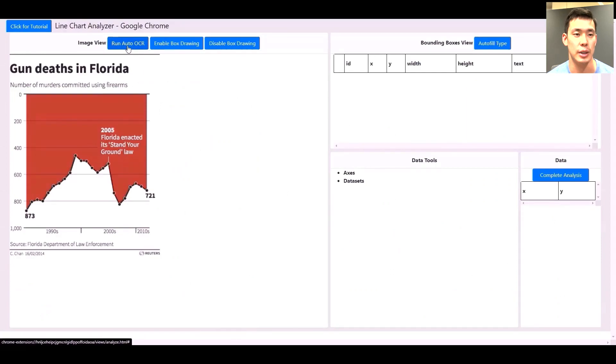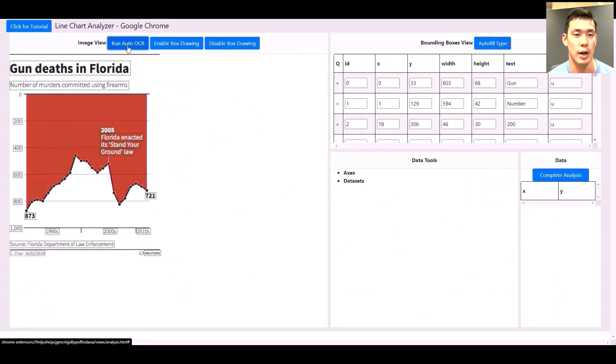First, we run optical character recognition to extract all the text. If it does not extract some text elements, we can manually draw a box around it and fill it.